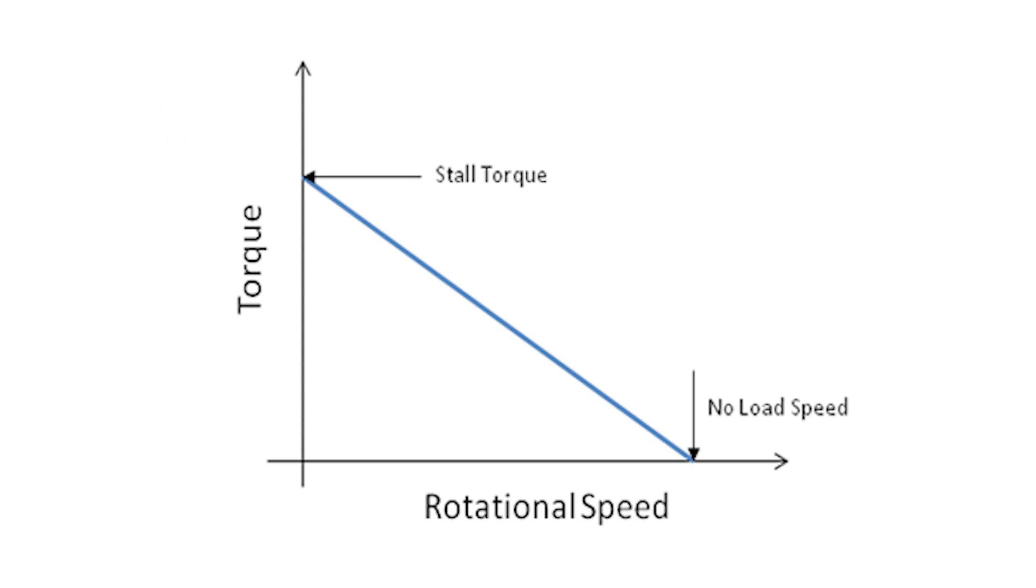This is why a DC motor's torque speed curve is a descending line with negative slope.